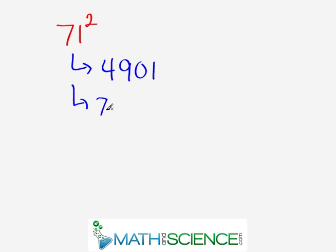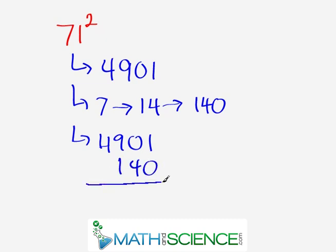7 times 1 gives us 7. Doubling that gives us 14. Sticking a 0 gives me 140. So in your mental head, you should think 7, 14, 140. Now, let's add these together. 4901, 140. Add these together.